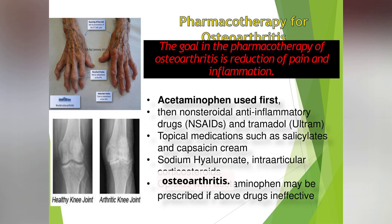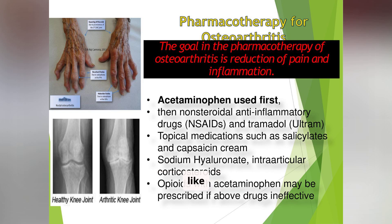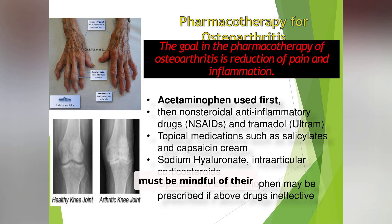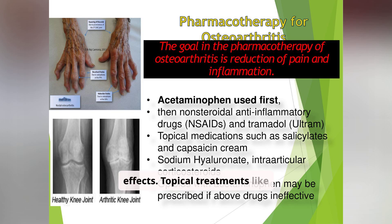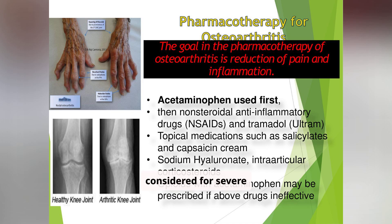Now let's focus on osteoarthritis. The primary goal of pharmacotherapy here is to manage pain and inflammation, improving the patient's ability to function. We often start with simple analgesics like acetaminophen. For more significant pain, NSAIDs can be effective, but we must be mindful of their potential gastrointestinal and cardiovascular side effects. Topical treatments like capsaicin cream can provide localized pain relief. In some cases, intraarticular corticosteroid injections can offer temporary relief. Tramadol and, in rare instances, opioids may be considered for severe pain, but always with careful consideration of the risks and benefits.